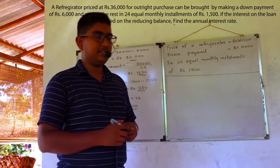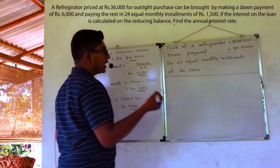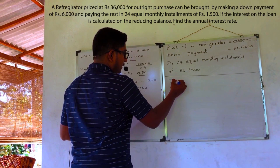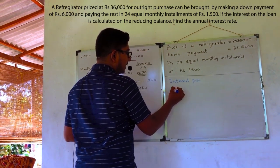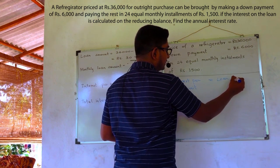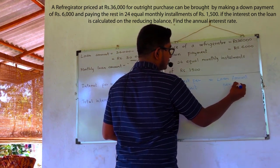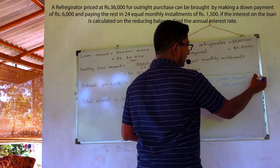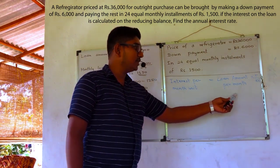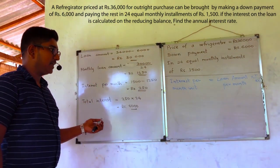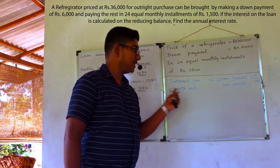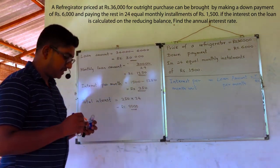Here, we have to calculate the interest rate because the interest rate is not given. If we want to calculate the interest rate, there is a specific equation we can use: interest per month unit equals loan amount per month, multiplied by the interest rate R, divided by 100. We cannot use this equation directly for calculation, but I advise you to remember this equation, substitute the specific values, and solve for R.